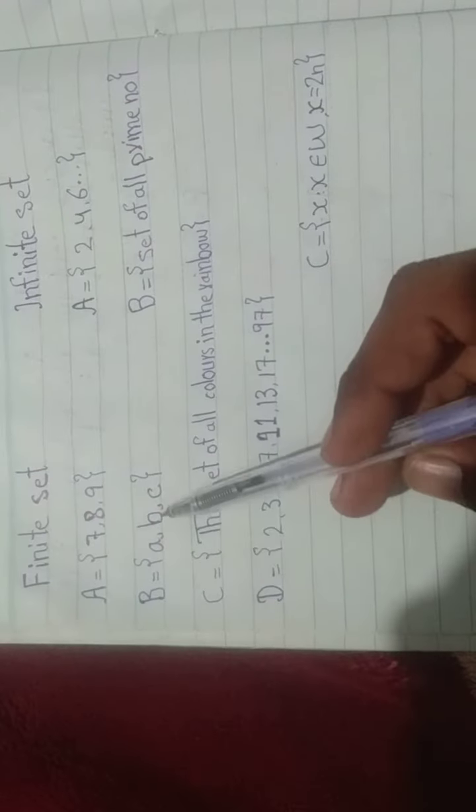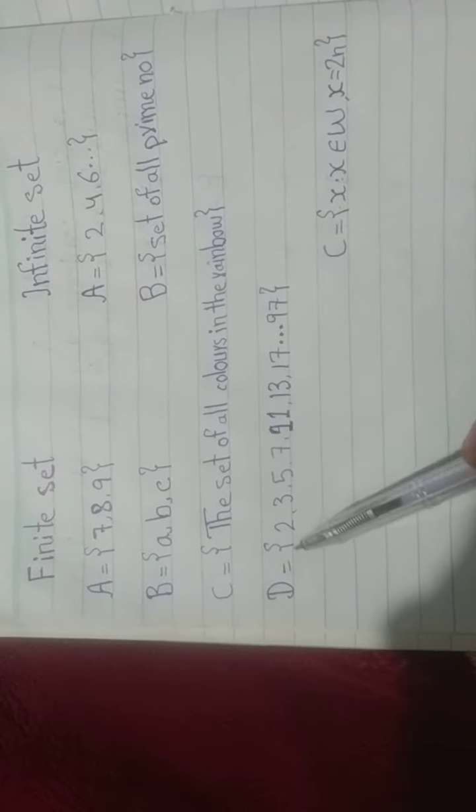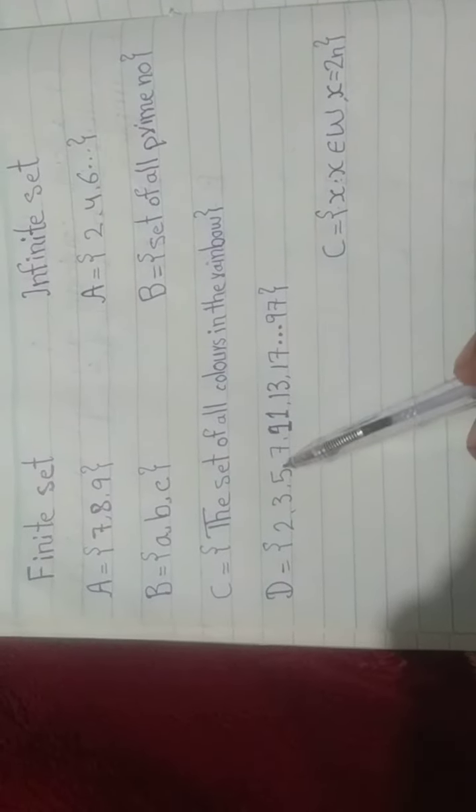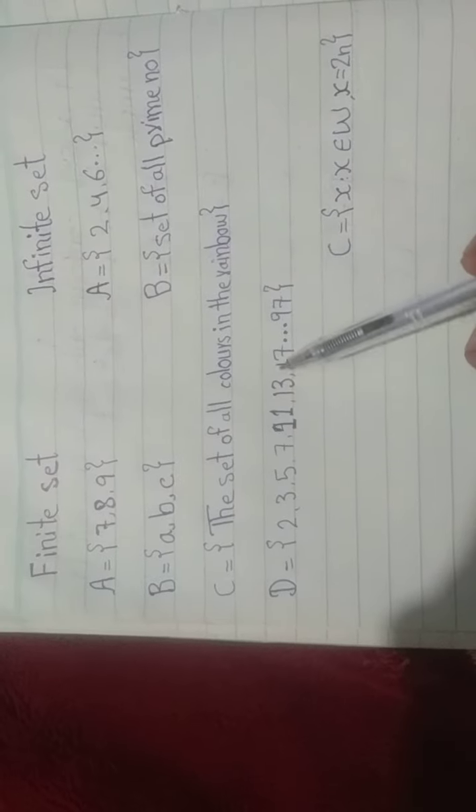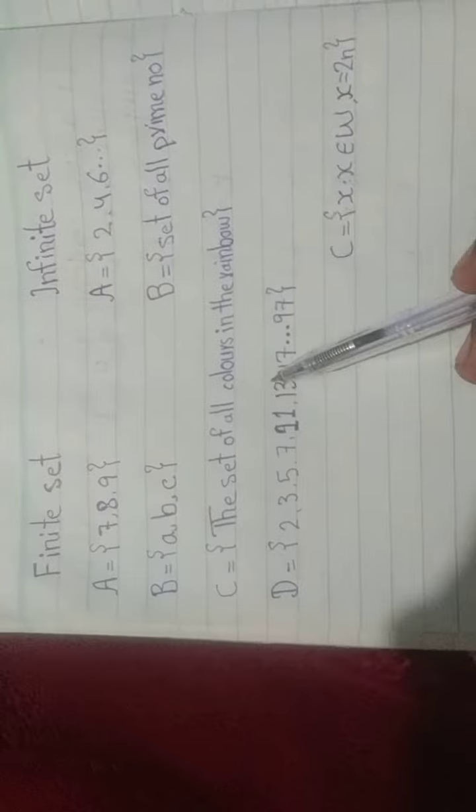Set B = {a, b, c}. Set C contains the set of all colors in the rainbow. Set D contains {2, 3, 5, 7, 11, 13, 17, ... 297} - it is limited, that is said to be a finite set.